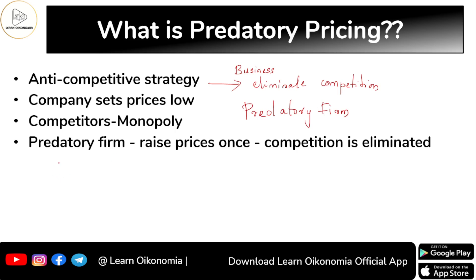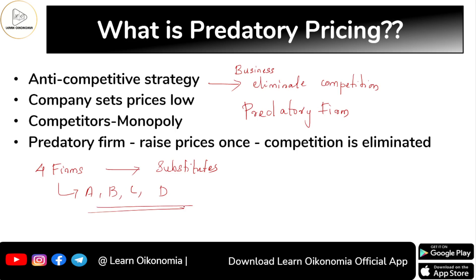Assume there are four firms in the economy — firm A, firm B, firm C, and firm D — all producing substitute goods. Out of these four firms, firm D will change its pricing behavior.